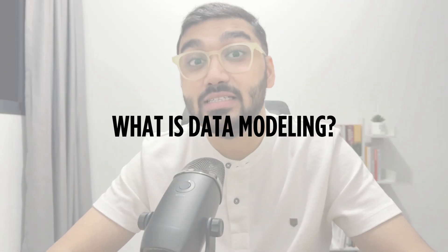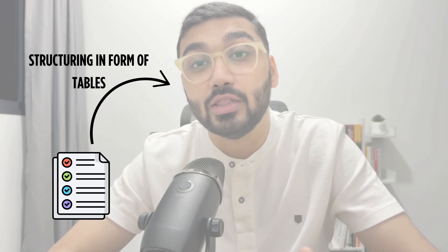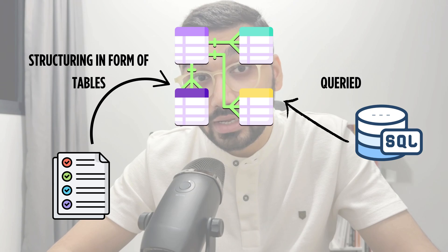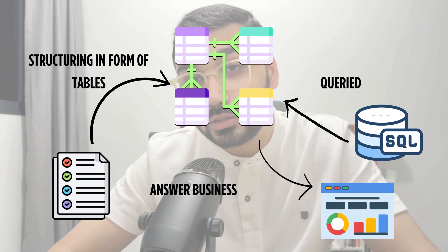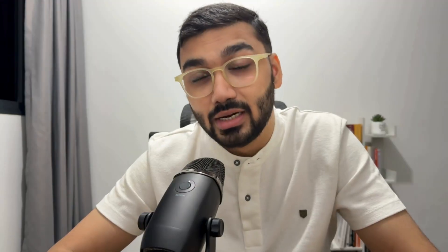What exactly is data modeling? In very simple terms, data modeling is a way of taking business requirements and information and structuring and organizing that information in the form of tables so that they can be queried to find out answers to several business questions. You take all the information, design a set of tables with relationships, and finally query those tables to find answers to business questions.